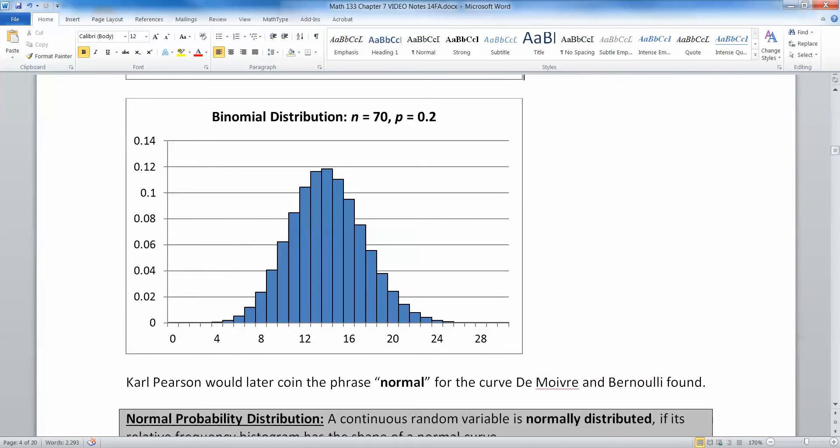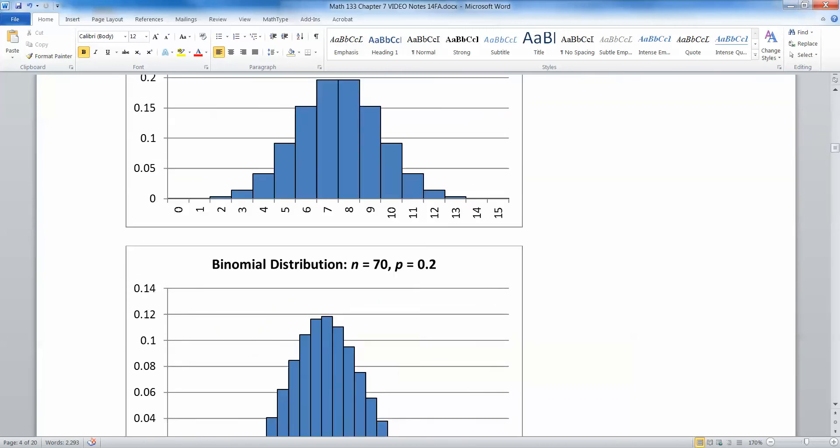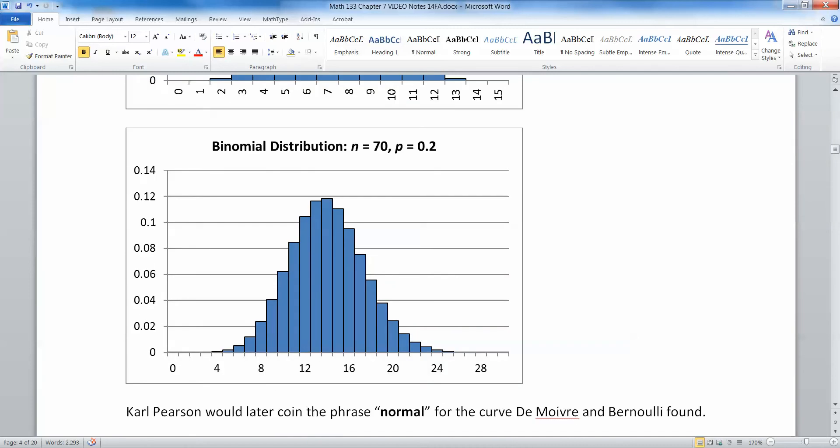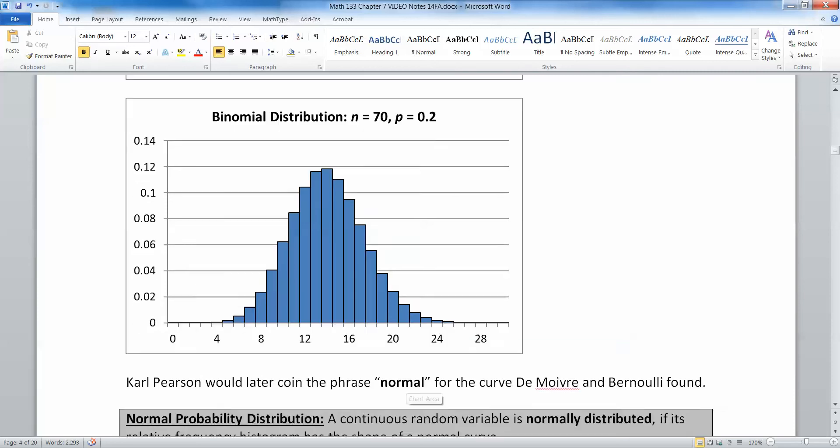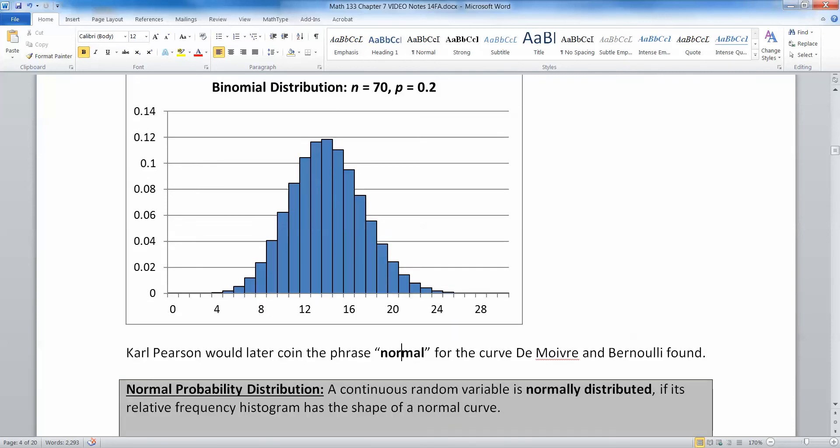And then if you let n be 70, look what's happening. It was symmetric, it was nice, but as you let n increase and get larger and larger, the curve turns more and more towards this classic bell-shaped curve that we know and love. Carl Pearson would later coin the term normal for this curve. He called it the normal curve.